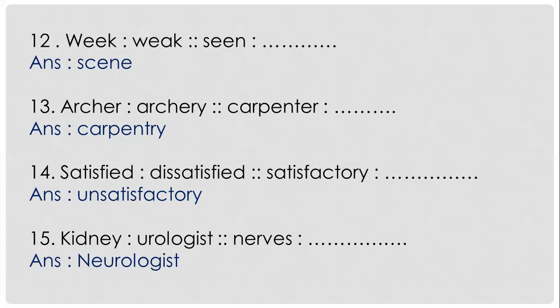Next: 'kidney' is to 'urologist' as 'nerves' is to dash. The specialist who cures your kidney disease is known as a urologist. The same way, the doctors or specialists who take care of and cure your nerves-related disease are known as a neurologist. See the first pair carefully, find out the relation between them, and similarly find out the answer for the second pair. These were the 15 questions taken from previous year question papers and similar questions may very likely be repeated in upcoming exams.